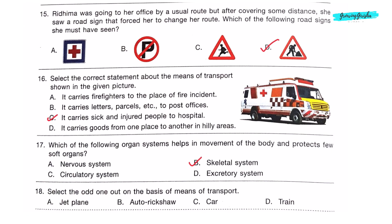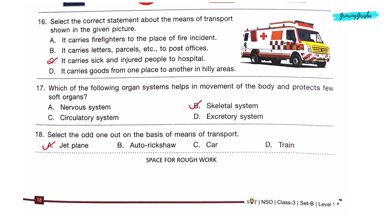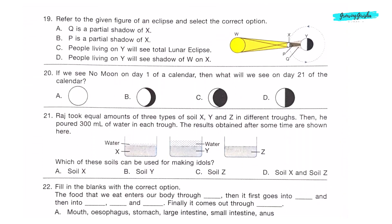Question 18: Select the odd one out on the basis of means of transport. Auto rickshaw, car and train are land transport. Jet plane is an air transport. So jet plane is the odd one out, Option A. Question 19: Refer to the given figure of an eclipse and select the correct option. The given picture is of a solar eclipse. W is sun, X is moon, Y is earth, P is the full shadow, and Q is the partial shadow of moon on earth. So option A is the correct answer: Q is a partial shadow of X.